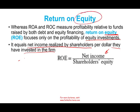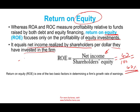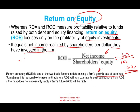Assume net income is $40 and you have equity of 100. Return on equity is 40%, which is a pretty high return. If that's true, you need to question the company's performance — 40% ROE is high; it means in roughly two and a half years you'd double your money. Return on equity is one of the two basic factors in determining growth rate of earnings. Sometimes it's reasonable to assume future ROE will approximate the past, but high ROE does not necessarily mean future ROE will be high, since accounting figures always talk about the past.